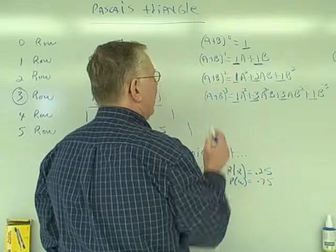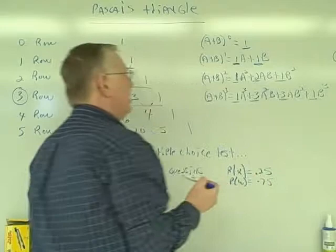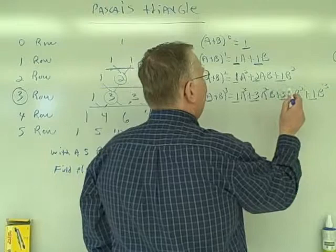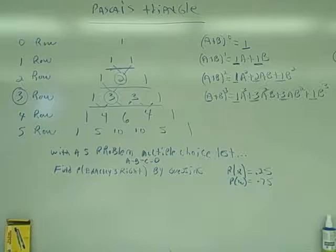Now, also notice: this is the exponent of my first term in the binomial. It goes down three, two, one, zero. And then the b goes from an exponent of zero up to an exponent of one, exponent of two, exponent of three. So the fourth row would, of course, be the coefficients of a plus b to the fourth, and the fifth row is the coefficients of a plus b to the fifth.